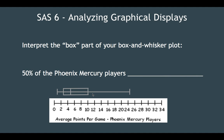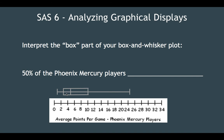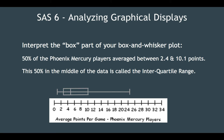Let's interpret the box part of the box and whisker plot. The box is this part right here. We said 25% is in Q1, 25% in Q2, 25% in Q3, and 25% in Q4. So we can say 50% of Mercury players fit inside this box — averaging between 2.4 and 10.1 points. We know the box holds 50% of the players' points per game values. This 50% in the middle of the data is called the interquartile range, or IQR.